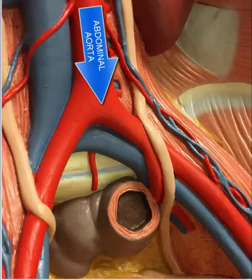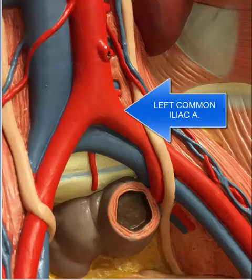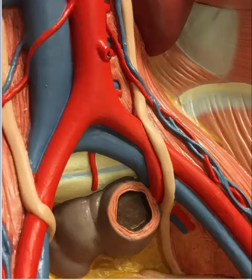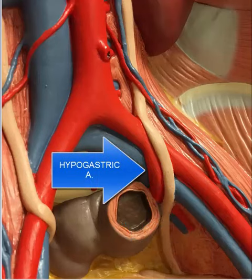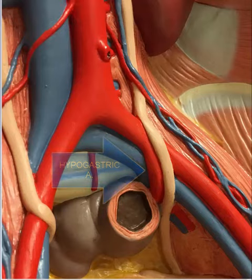At about the level of the umbilicus, the abdominal aorta divides into a left and right common iliac artery. It then divides again forming the external iliac artery and the hypogastric artery. The anatomists refer to this artery as the internal iliac artery, but pelvic surgeons call it the hypogastric artery, so we will call it that.